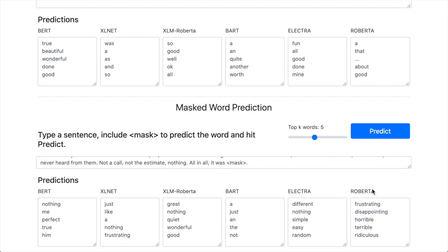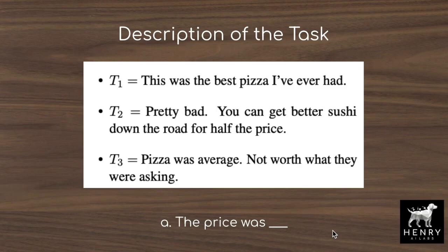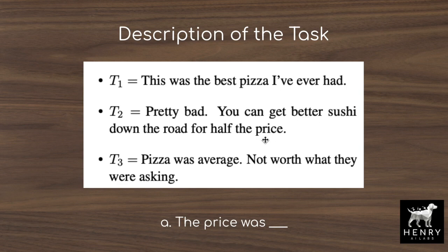The paper also gives examples of different restaurant reviews — like 'this was the best pizza I've ever had' and 'pretty bad, you can get better sushi down the road for half the price' — showing how you need a description of the task where the pattern can help with labeling. For example, you might classify by quality of pizza, or identify reviews that mention price, which could be useful to search through Yelp reviews and see how many people have an opinion on a specific component like the price of food.